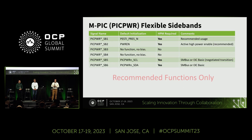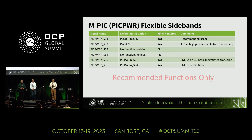On the MPIC power connector, we also have this definition of flexible sideband signals. We have six sidebands now accompanying our power cables, and they have a specific function. However, these flexible sidebands are recommended functions only on the MPIC power connector. As you can see, we are supporting PESTI — it's optional — and the recommended use is to support PESTI in the present signal. And we have a couple of extras.